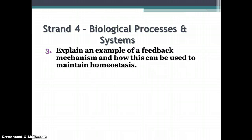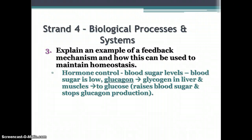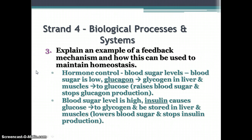Next, we have feedback mechanisms and how they maintain homeostasis. Feedback is a necessary part of the endocrine system, but all body systems are involved in feedback one way or another. An example is hormone control of blood sugar levels. When blood sugar is low, glucagon stimulates glycogen in the liver and muscles to be released and converted to glucose, raising blood sugar and stopping glucagon production. When blood sugar is high, insulin causes glucose to be transformed into glycogen and stored, lowering blood sugar and stopping insulin production. This is a negative and positive feedback system where these two hormones interact with each other.